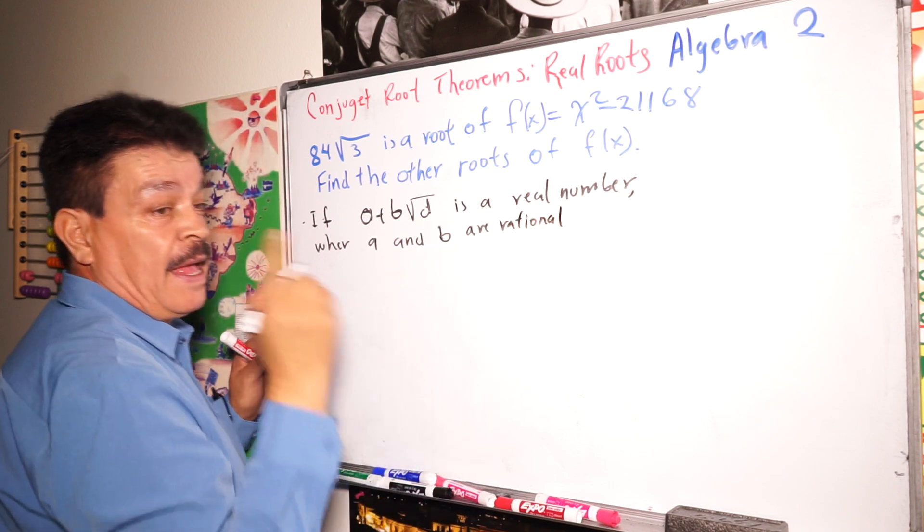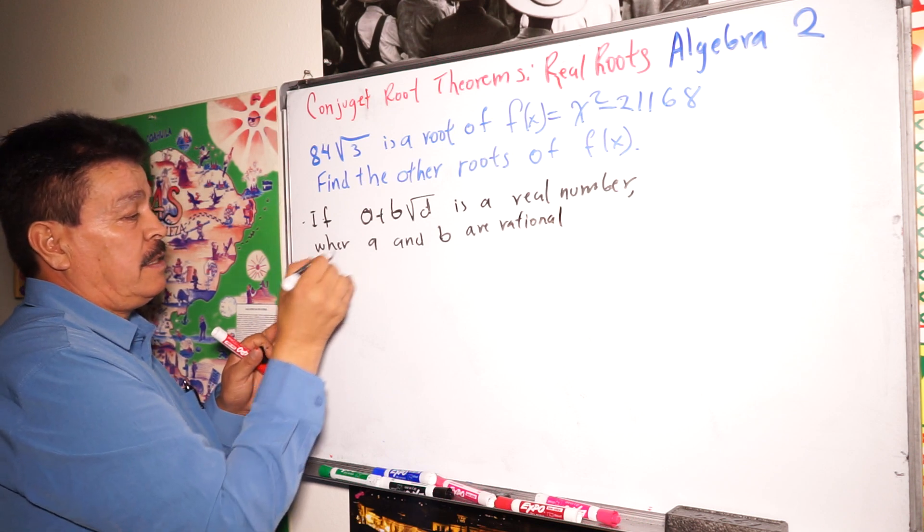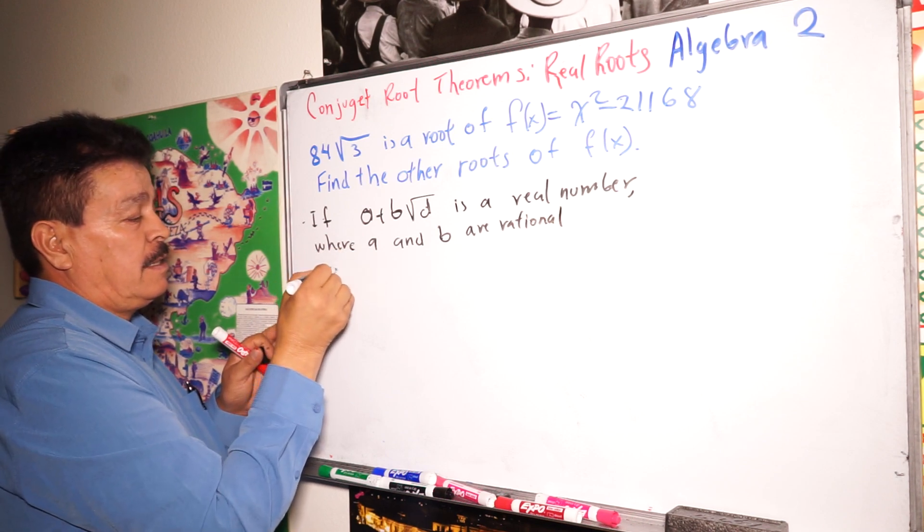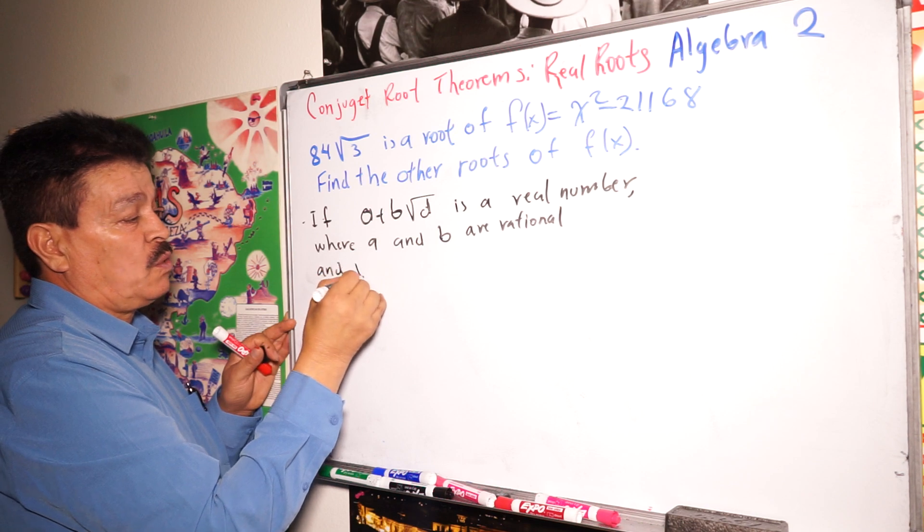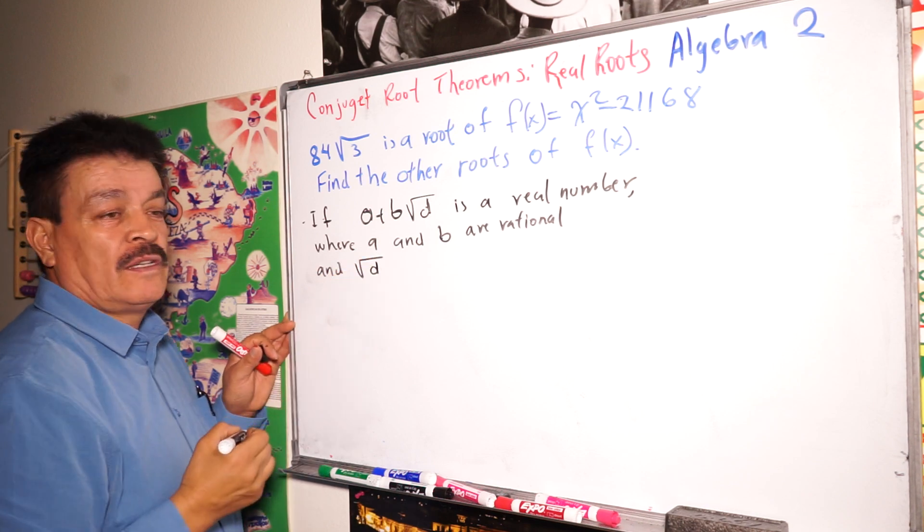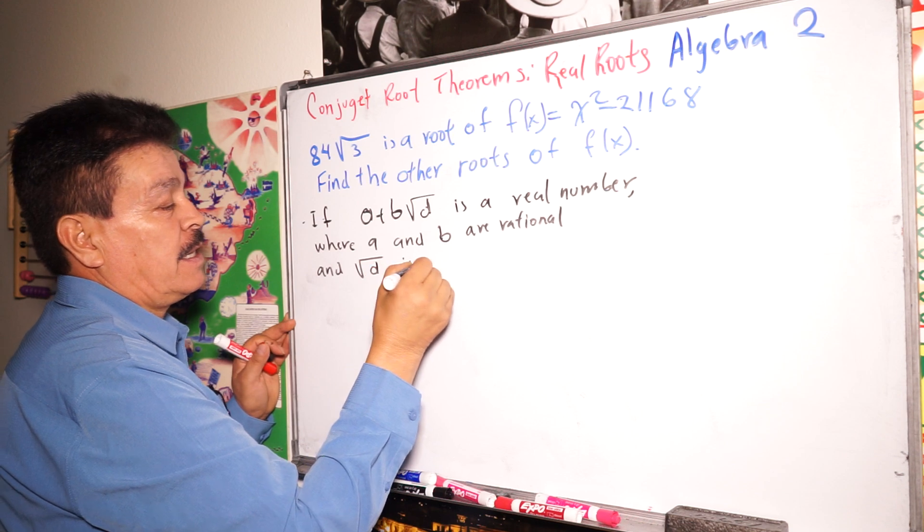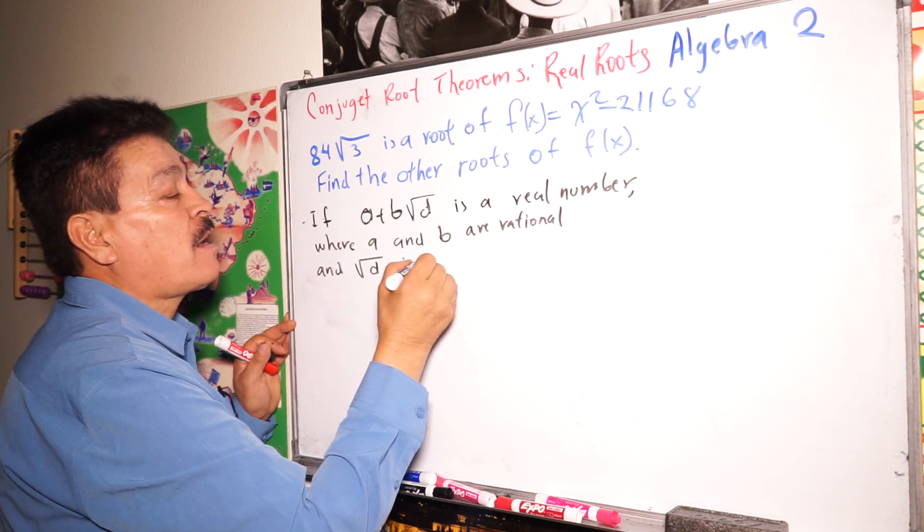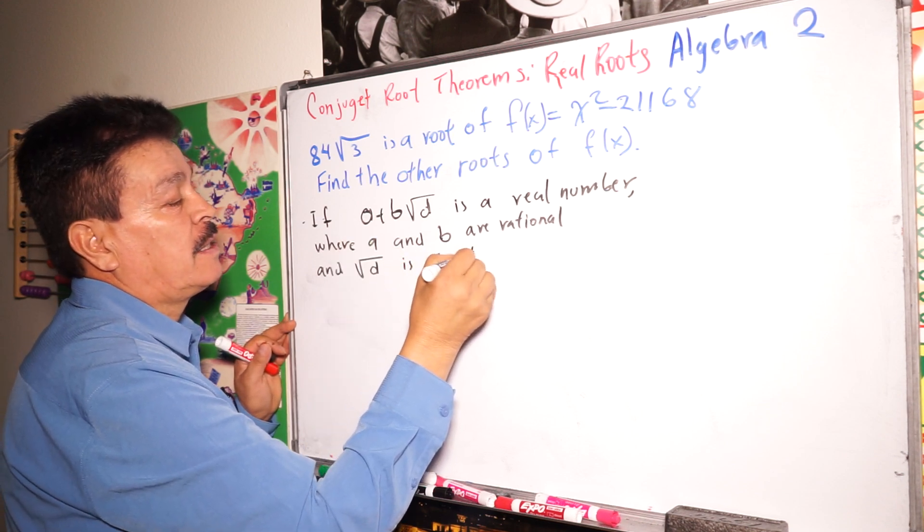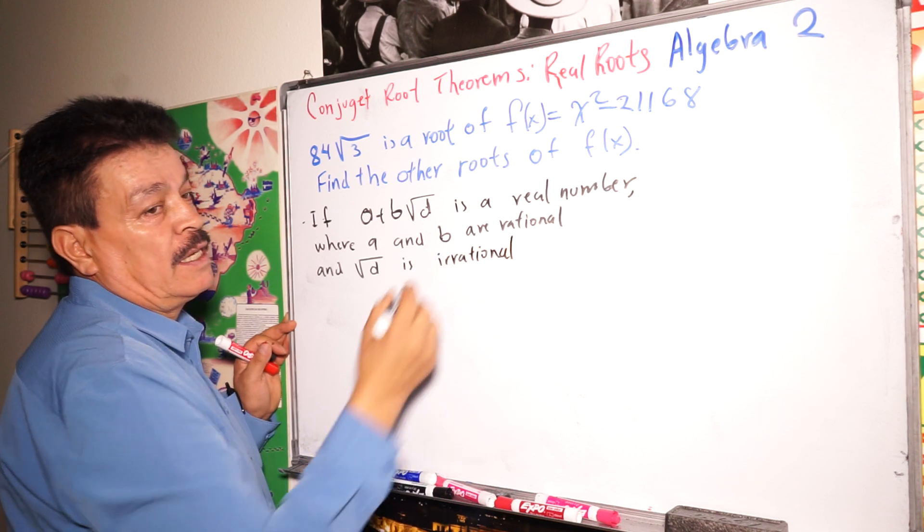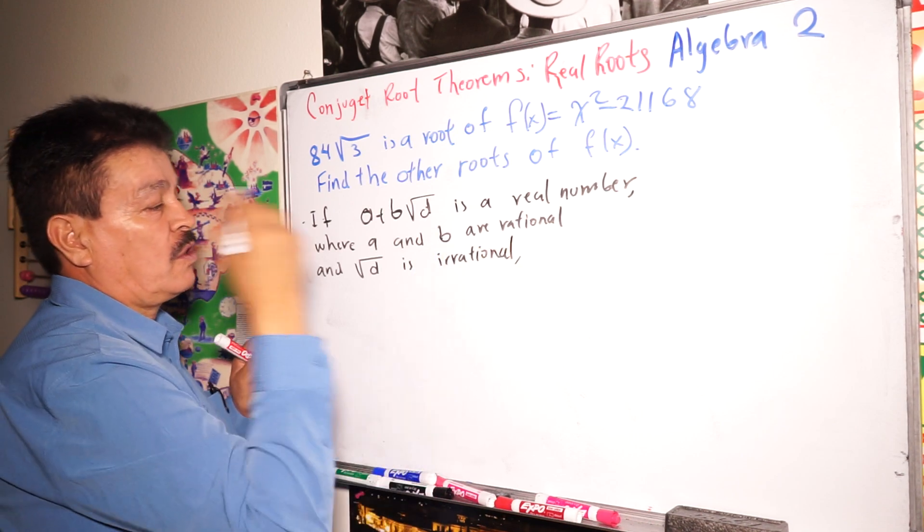Irrational. And here, a square root of d is irrational. It's irrational.